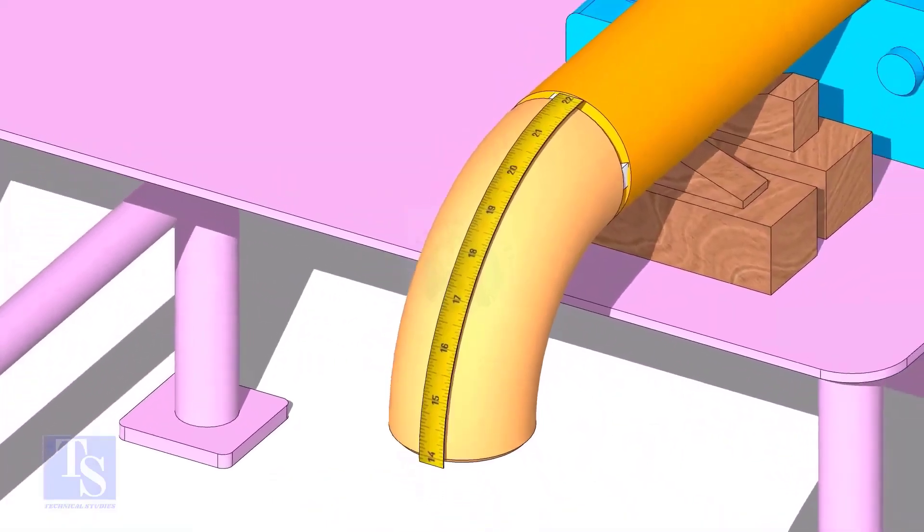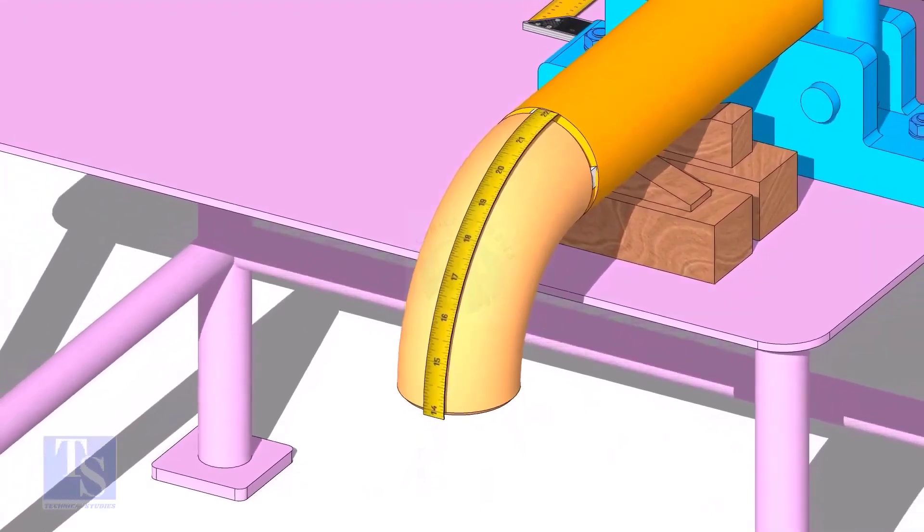Measure the outer circumference of the elbow and mark the half circumference on the center line as shown.